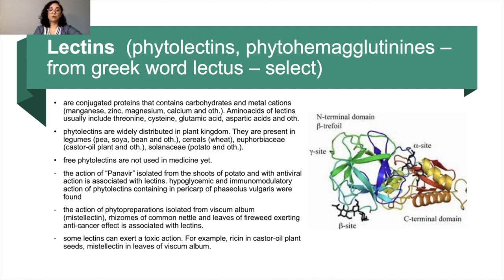Hypoglycemic and immunomodulatory action of phytolectins contained in pericarp of Phaseolus vulgaris were found. The action of phytopreparations isolated from Viscum album — mistletoe lectin, rhizomes of common nettle, and leaves of fireweed — exerting anti-cancer effect is associated with lectins. Some lectins can exert a toxic action, for example, ricin in castor oil plant seeds and mistletoe lectin in leaves of Viscum album.